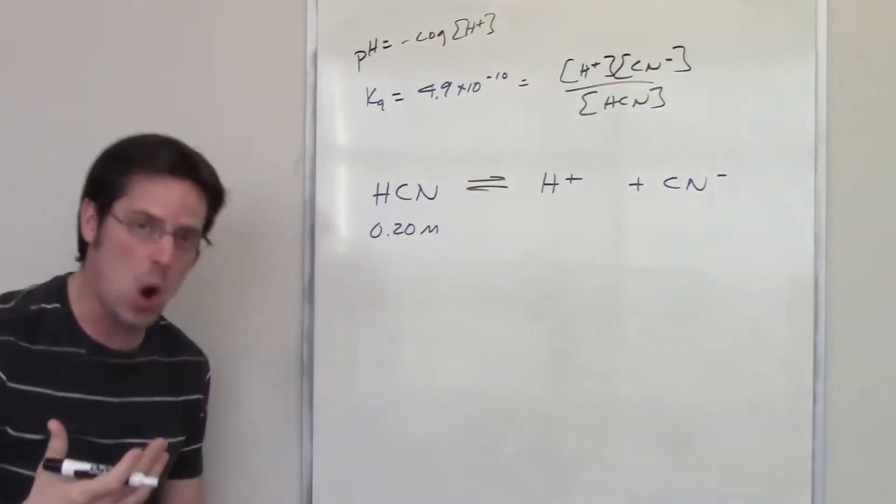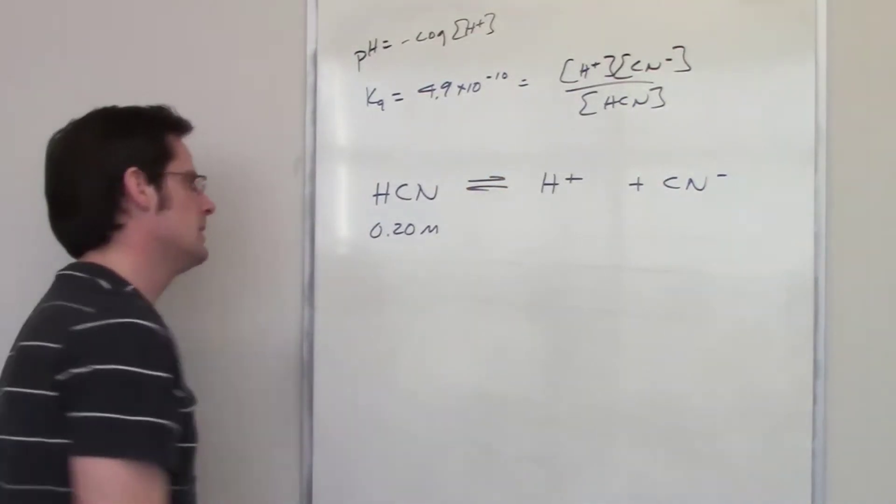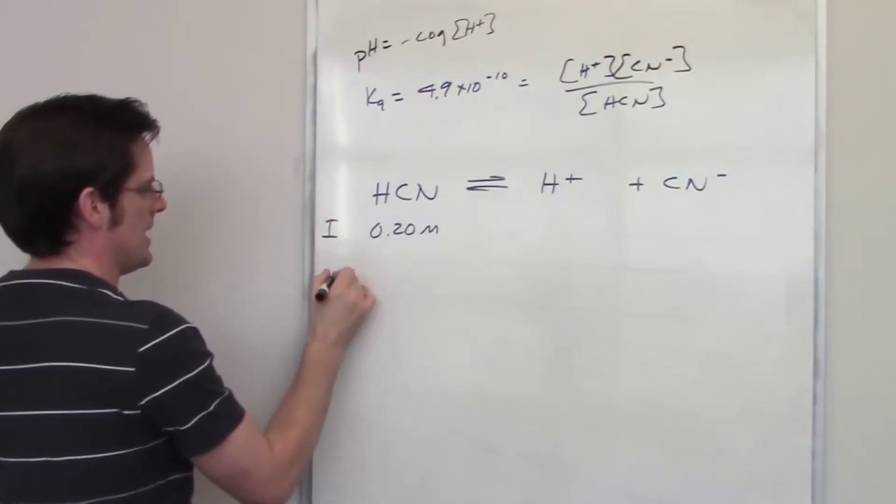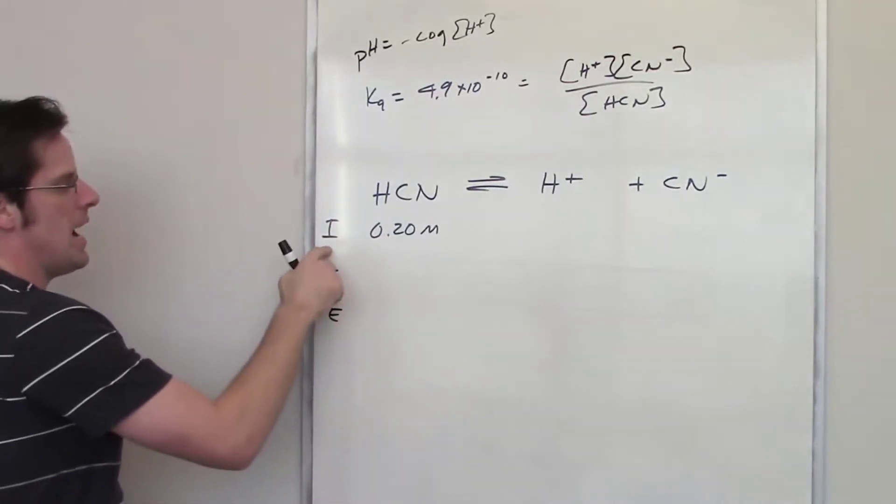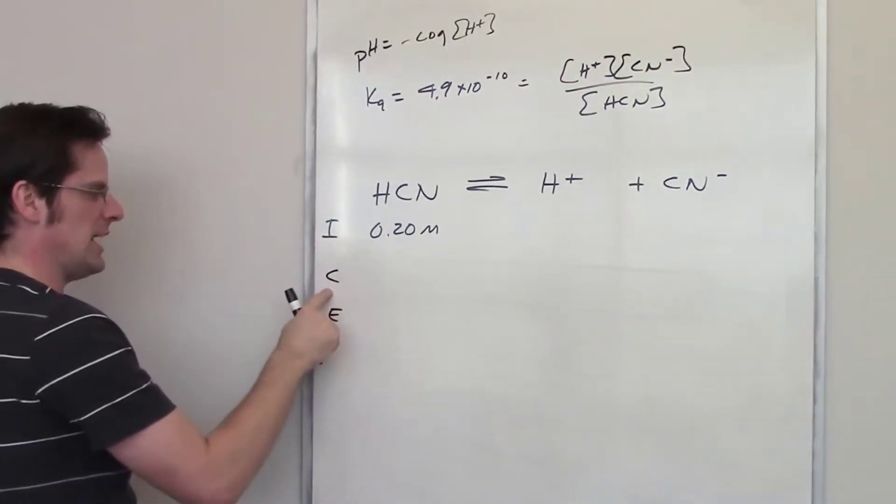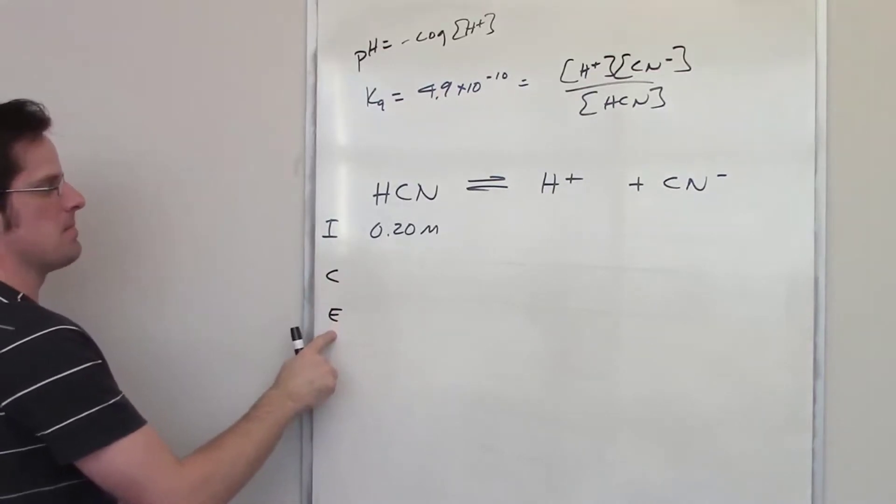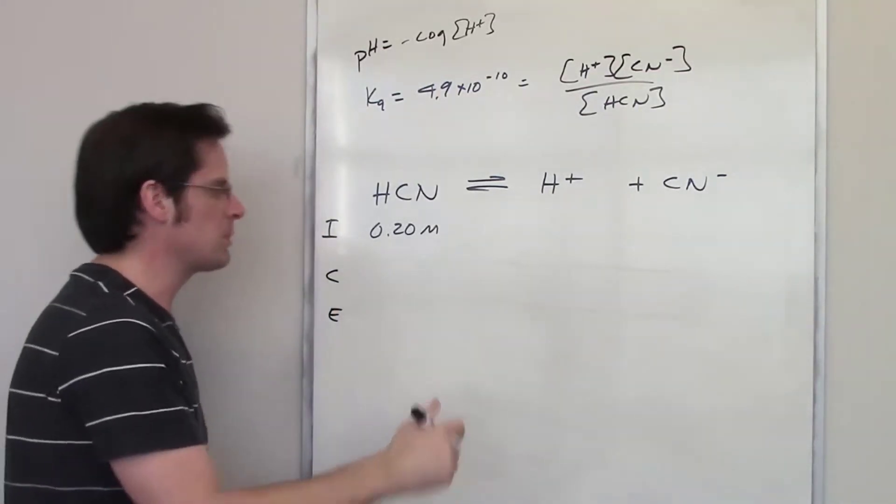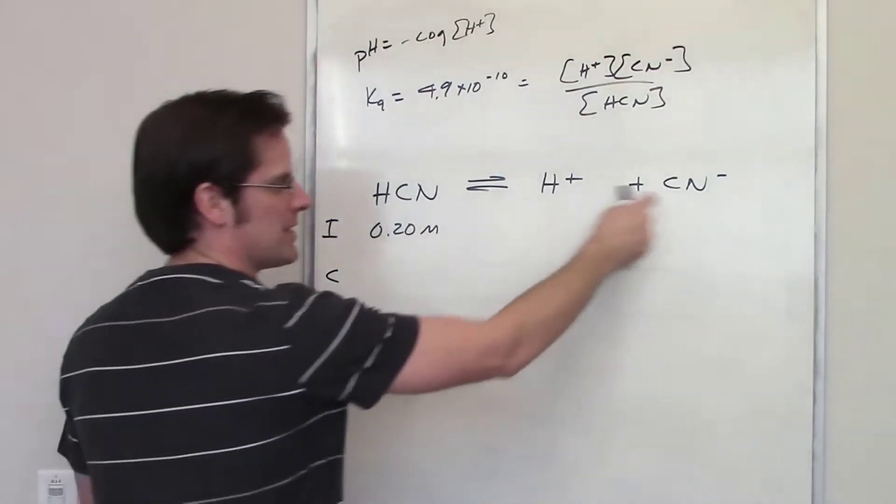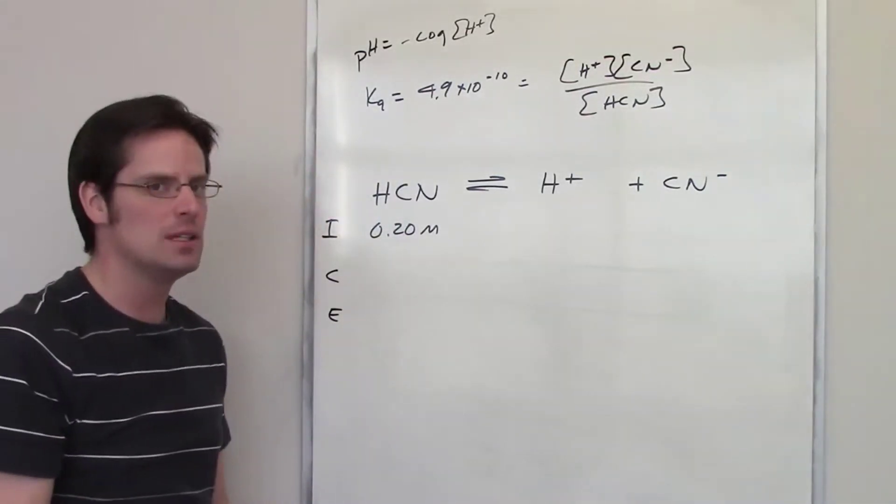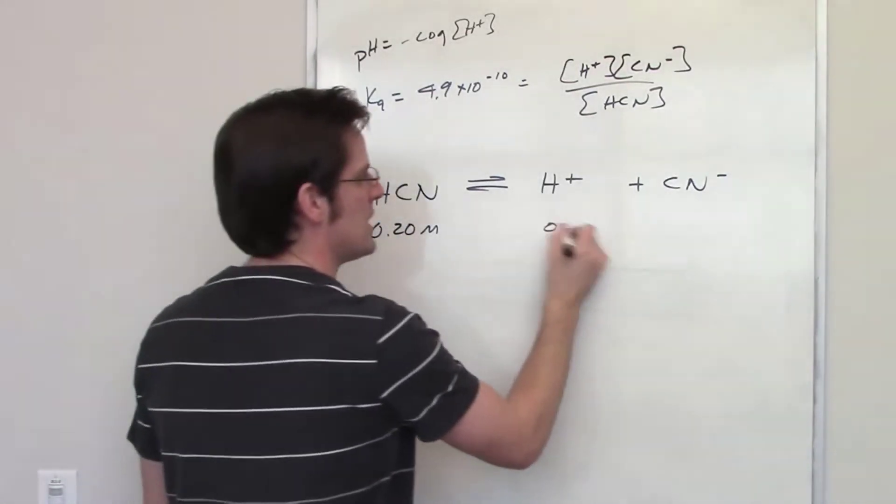It's an equilibrium arrow. So what do we do? We have to do an ICE table. ICE of course stands for Initial Change and Equilibrium. So at initiation I throw in 0.2 moles per liter of HCN. How much H plus, how much CN minus do I have? Well at initiation I've got zero of these.